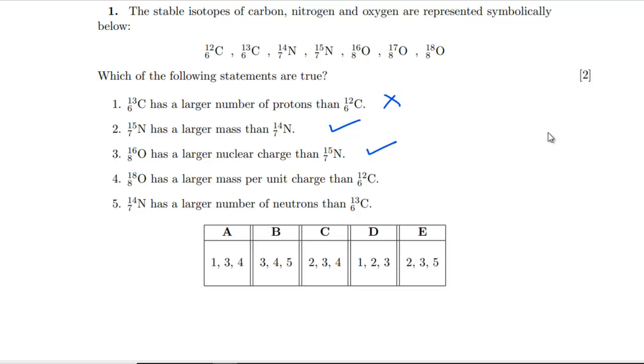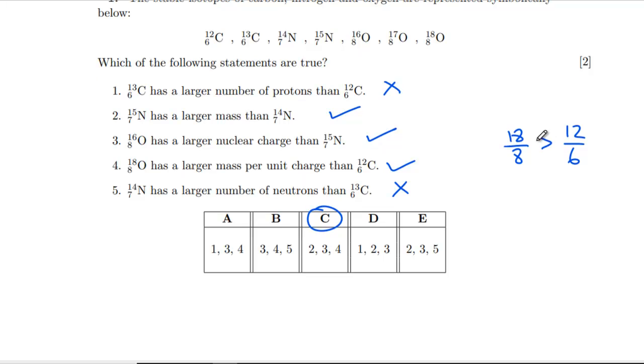Does oxygen-16 have a larger nuclear charge than nitrogen-15? Yep, it's got the extra proton. Does oxygen-18 have larger mass per unit charge? So is 18 over 8 greater than 12 over 6? Yes it is. Does nitrogen-14 have a larger number of neutrons than carbon-13? We got 7 and 7, so no. So we've got 2, 3, 4, which is C.